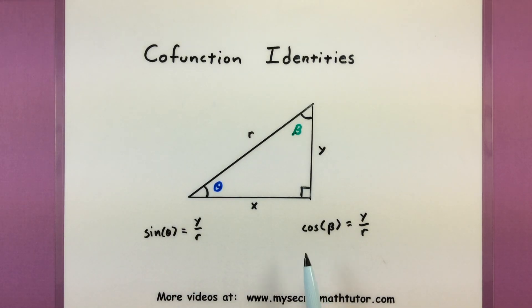This is exactly what we're looking for when I mean by cofunction identities. Sine and cosine will have the same value as long as their angles are complements of one another. So you can actually do this with a lot of other angles and essentially get the same value.